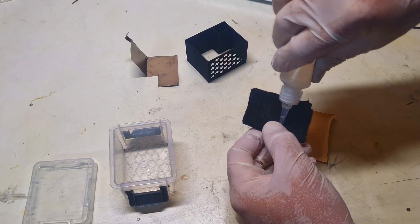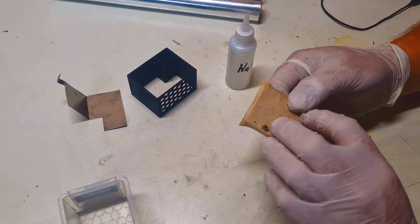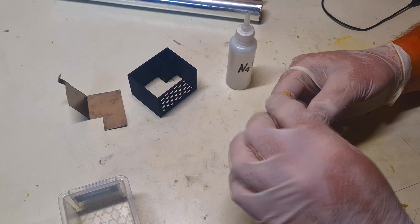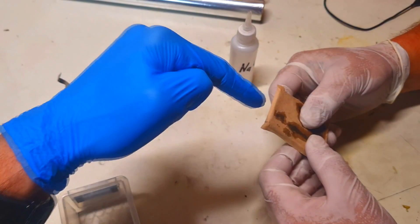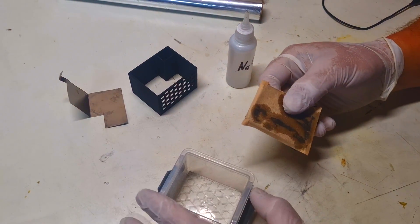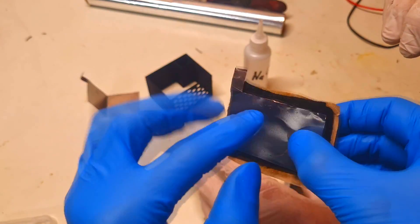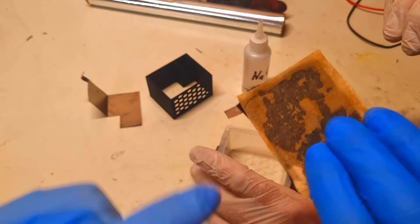The separator will go on top of the activated carbon felt. This is now the air cathode for this aluminum air battery: the current collector, activated carbon felt, and the separator.